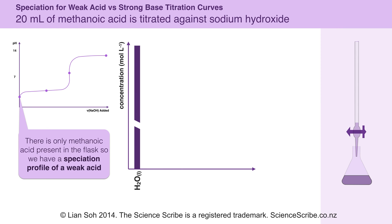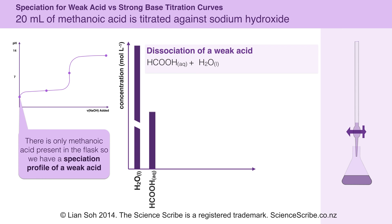At the very beginning, there's only methanoic acid present in the flask. Methanoic acid is my weak acid, so I'm looking at the species in solution for a weak acid. I've got methanoic acid in water, so I'm going to start with a big large bar for my methanoic acid. Since it is in water, it can dissociate, forming methanoate (HCOO-) and hydronium ions (H3O+). So I'm going to show my methanoic acid bar slightly decrease as it forms methanoate and hydronium ions.